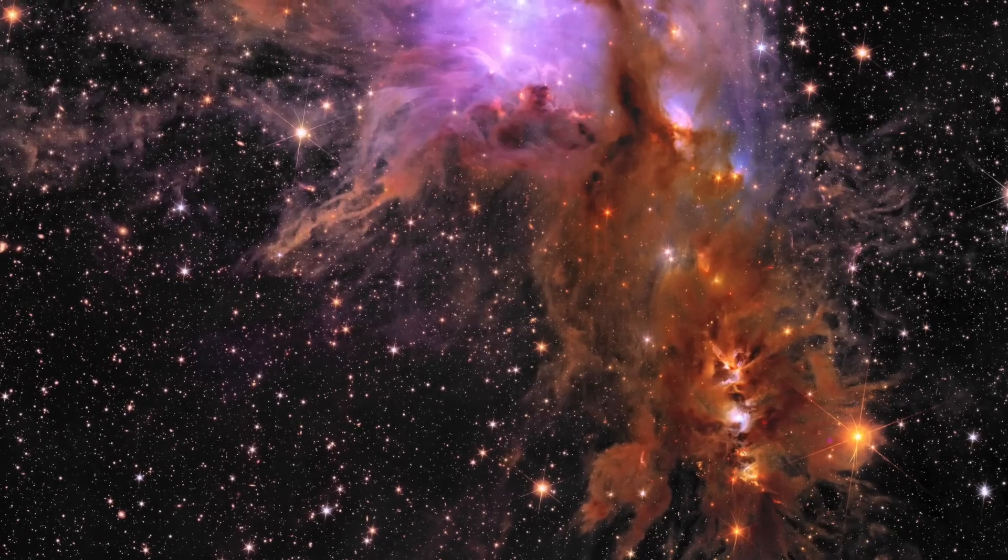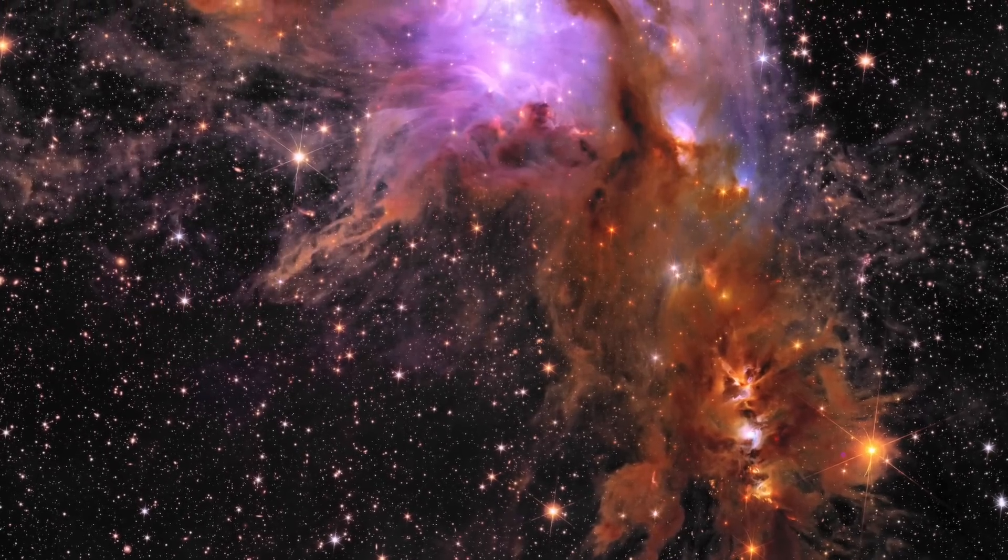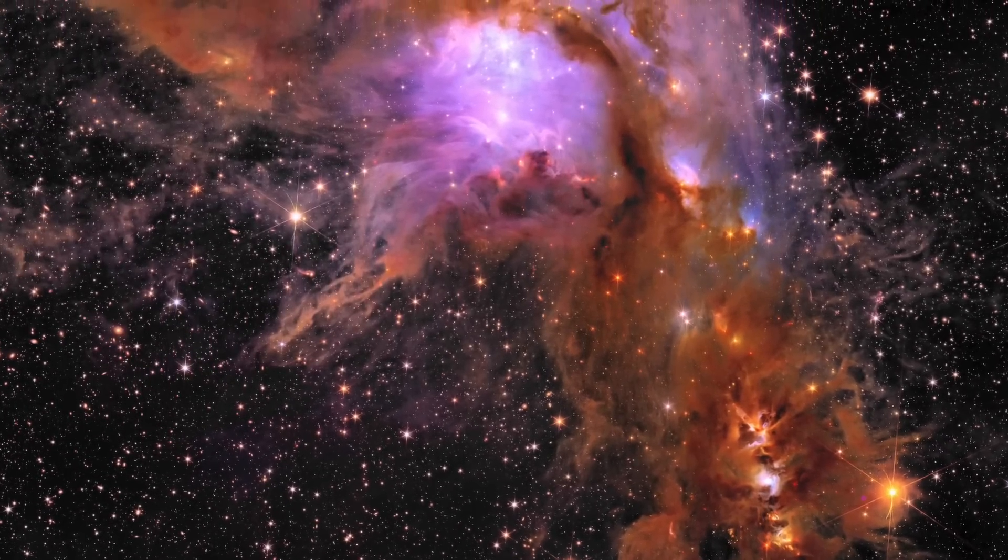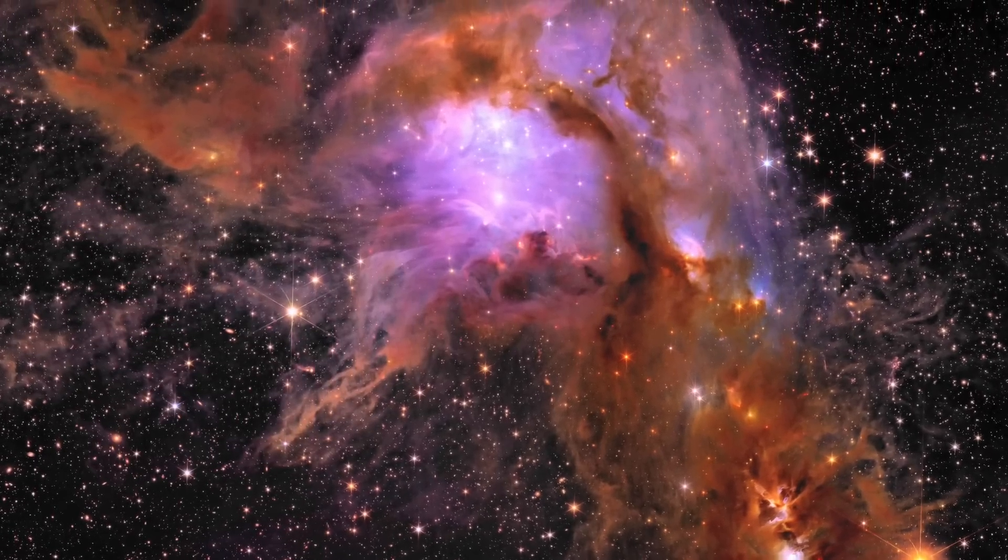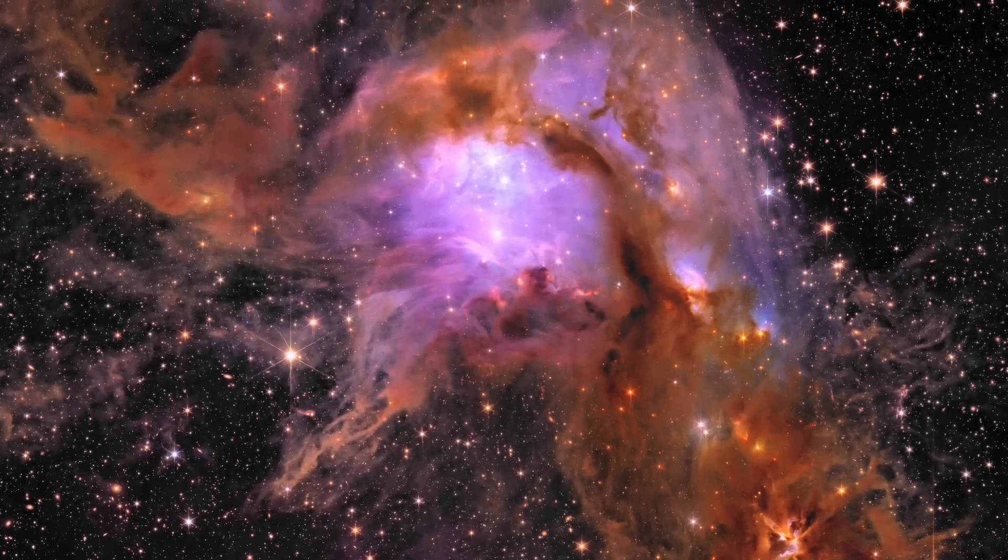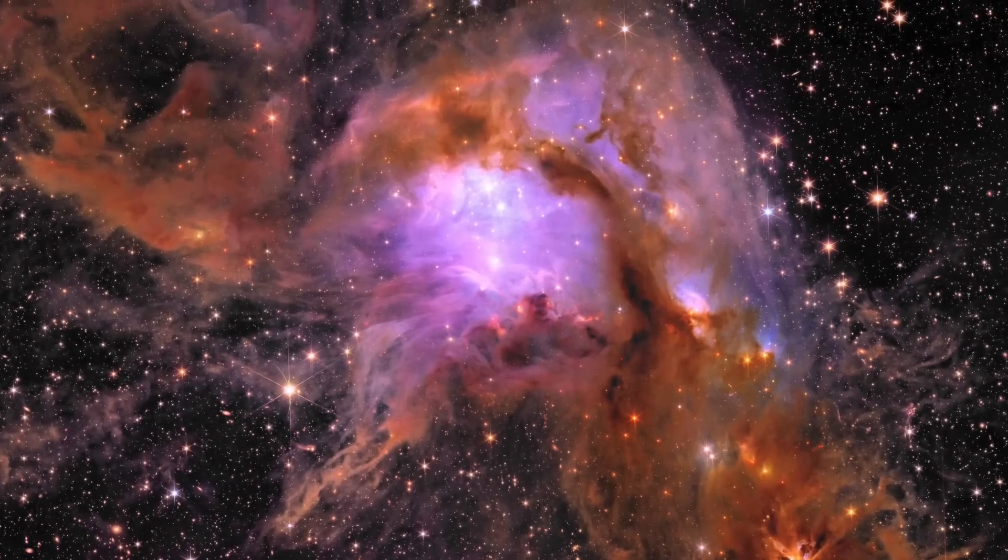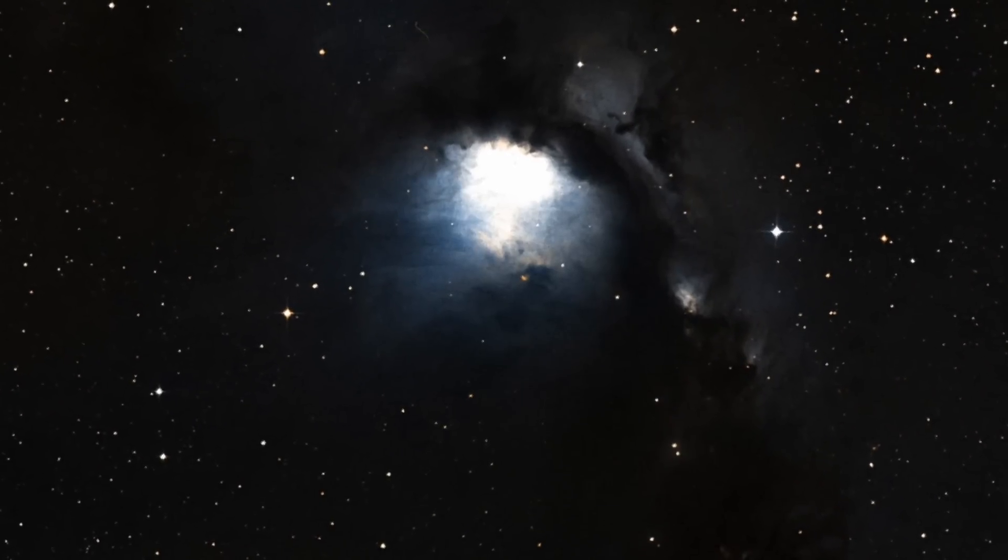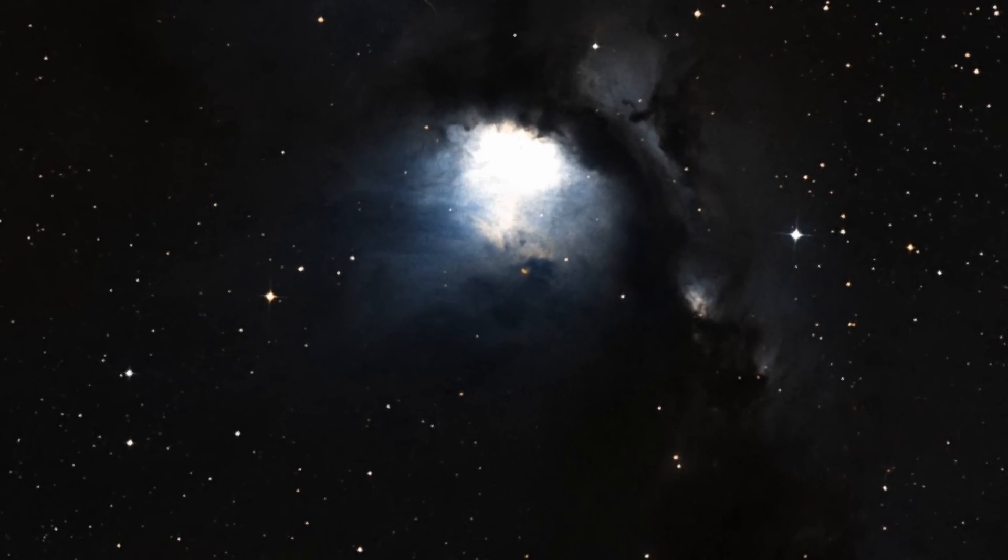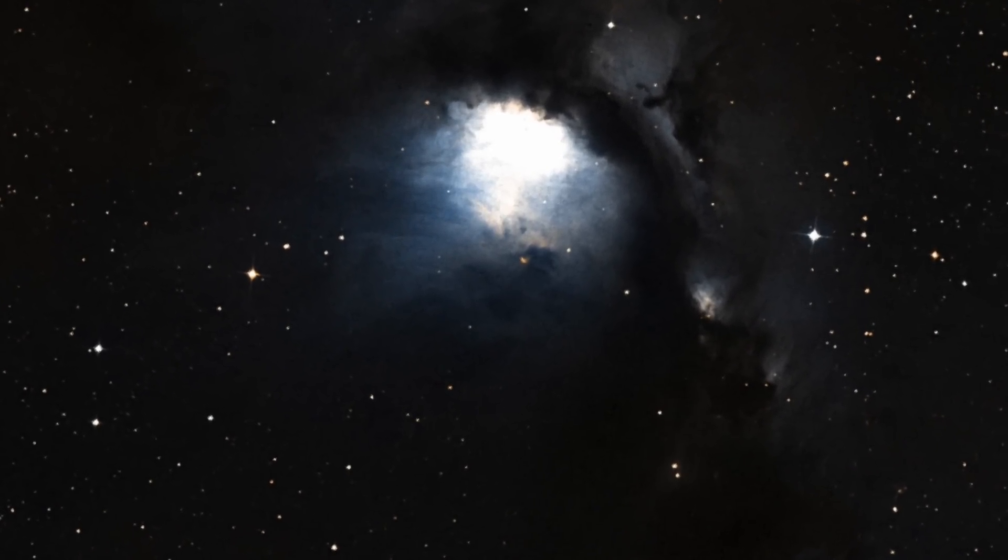Within M78 there are prominent dark clouds, dense concentrations of interstellar dust that obscure the light from stars and glowing gas behind them. They appear as dark patches or streaks known as dust lanes against the brighter background of the nebula. In ground-based data, the nebula looks like this, but you can see so many more details in the Euclid image.